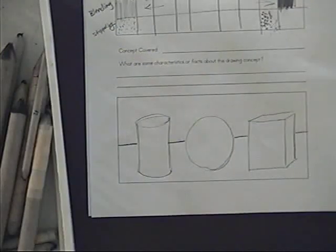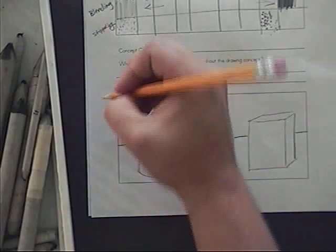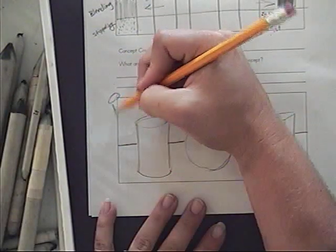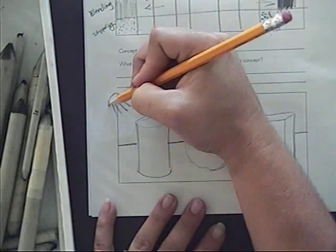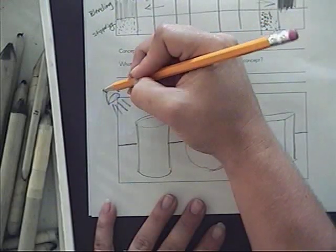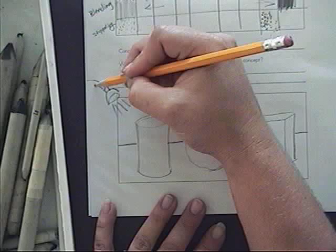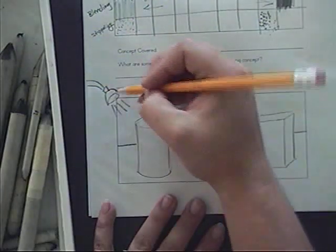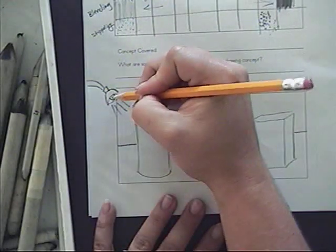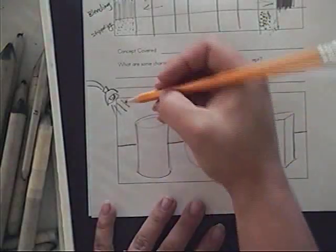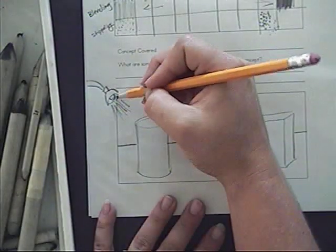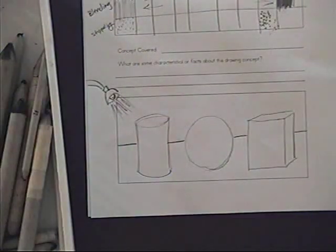And then indicate where your light source is going to be coming from. I have this little light up here. Yours can just be an X if you want, just so that we know where the light is coming from. Once you have this, I want you to rest your pencil again.